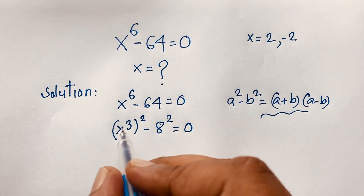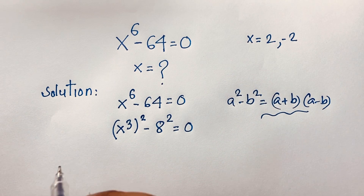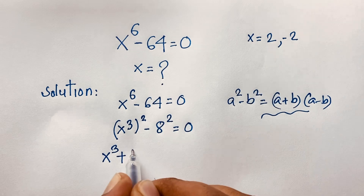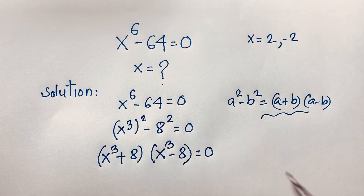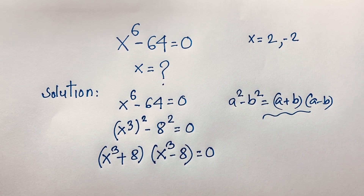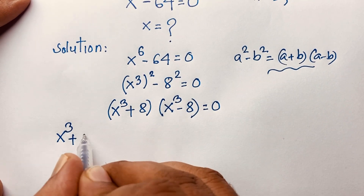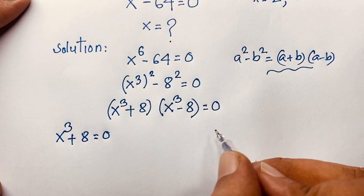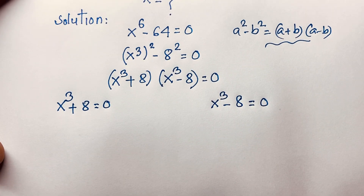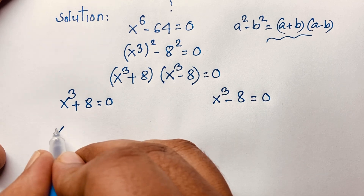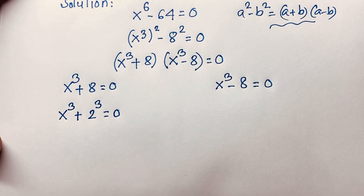Applying the formula, we get (x³ + 8)(x³ − 8) = 0. This gives us two cases. Case 1: x³ + 8 = 0, and Case 2: x³ − 8 = 0.